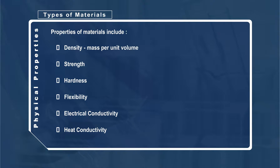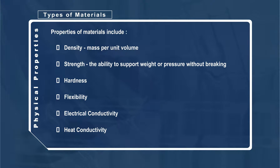The density of a material is a measure of how tightly packed the particles are in a substance. The strength of a material is its ability to support weight or pressure without breaking.